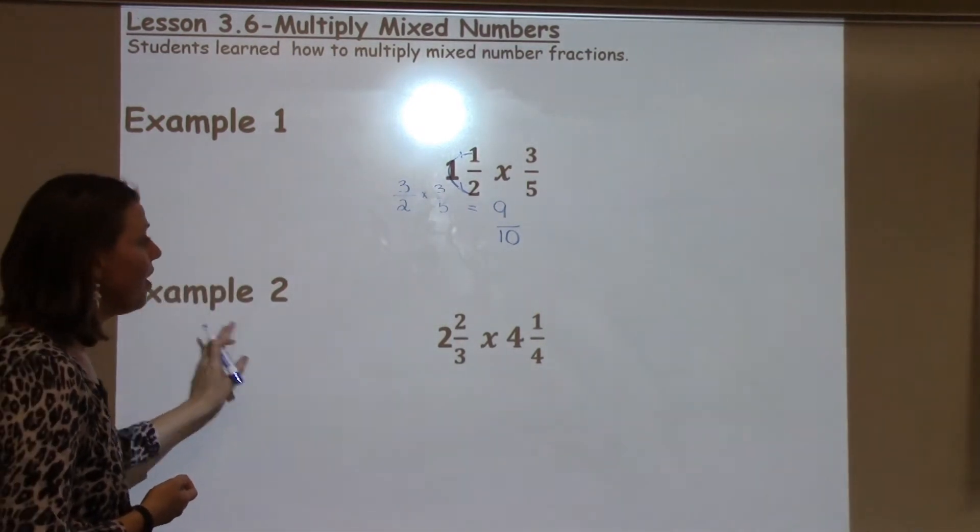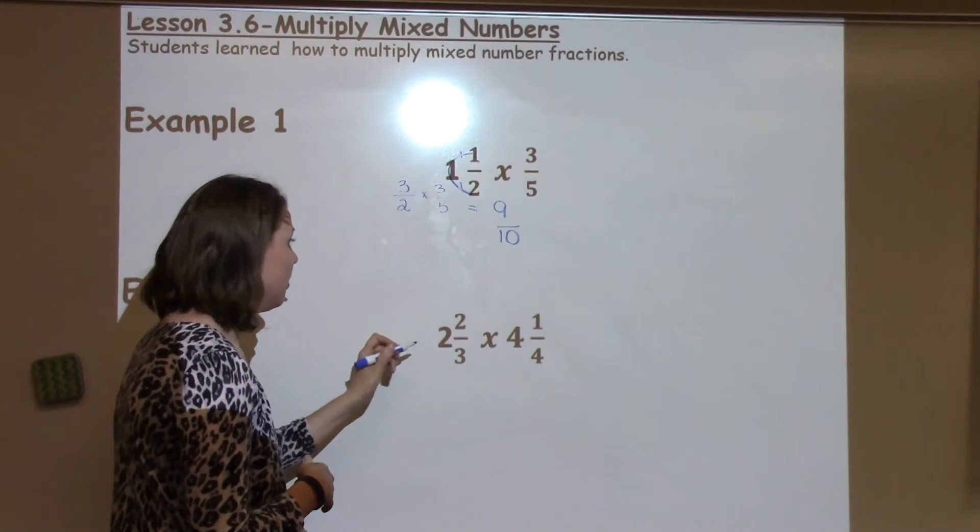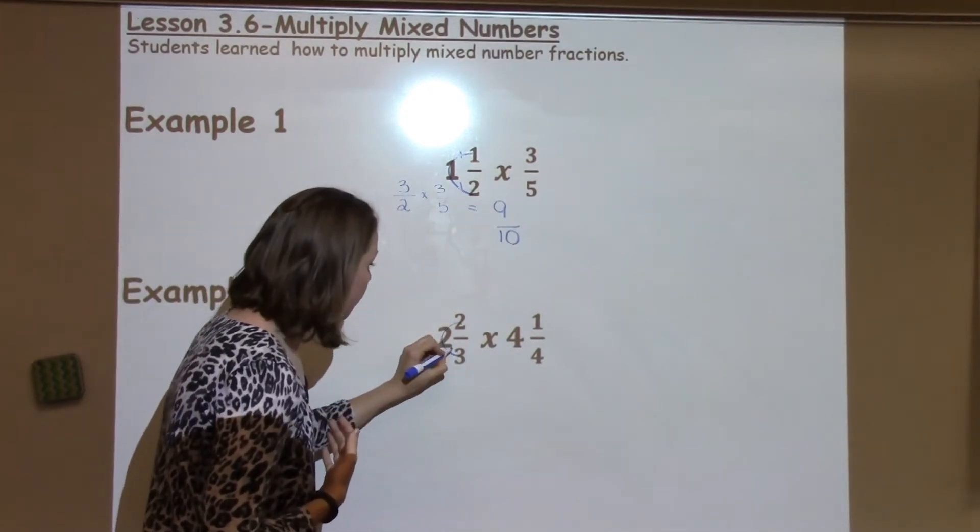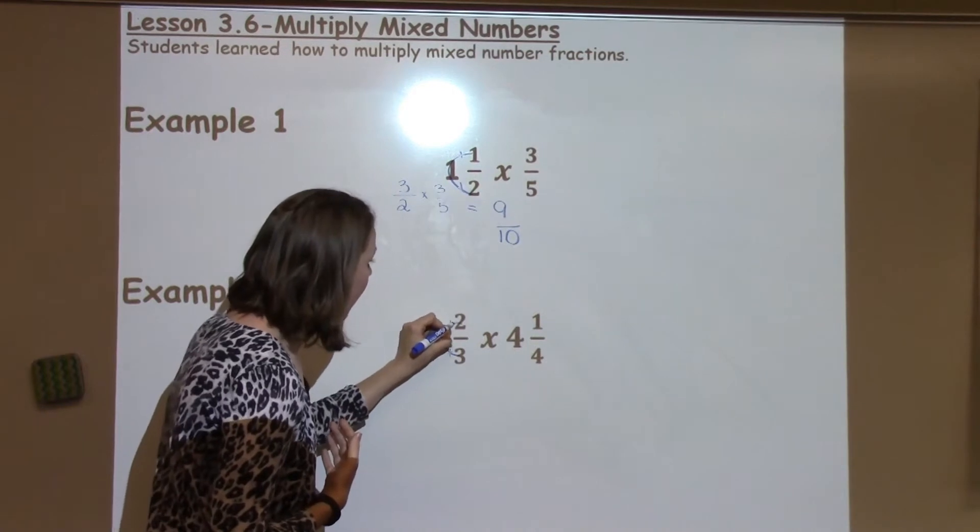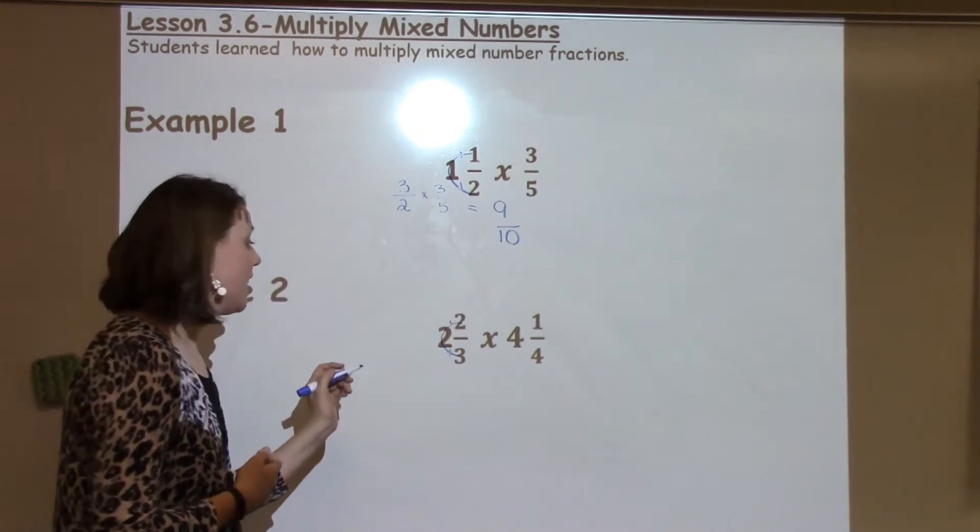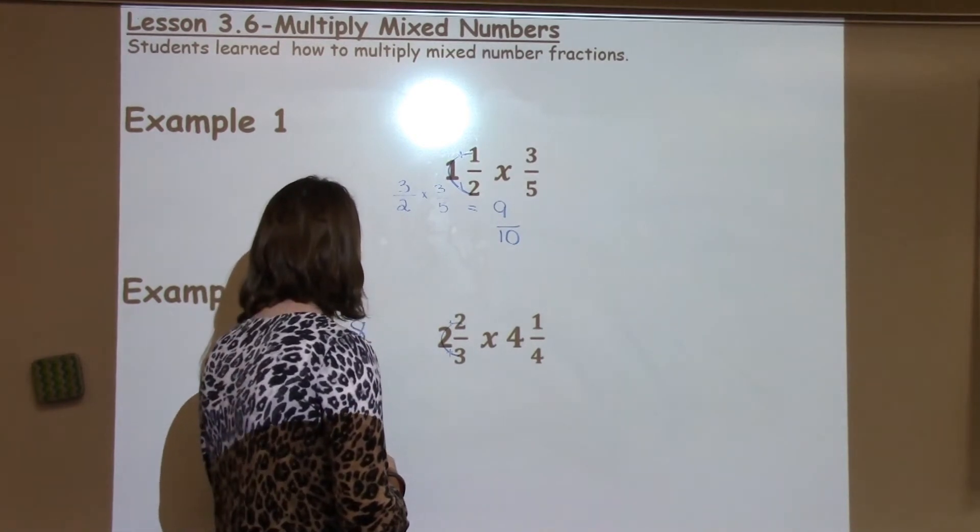For example 2, I'm going to do the C method, around the world, loop-de-loop, whatever your teacher calls it. What basically you need to know is you need to multiply, and then add. So 2 times 3 is 6, plus 2 more is 8. So I've got 8 thirds.